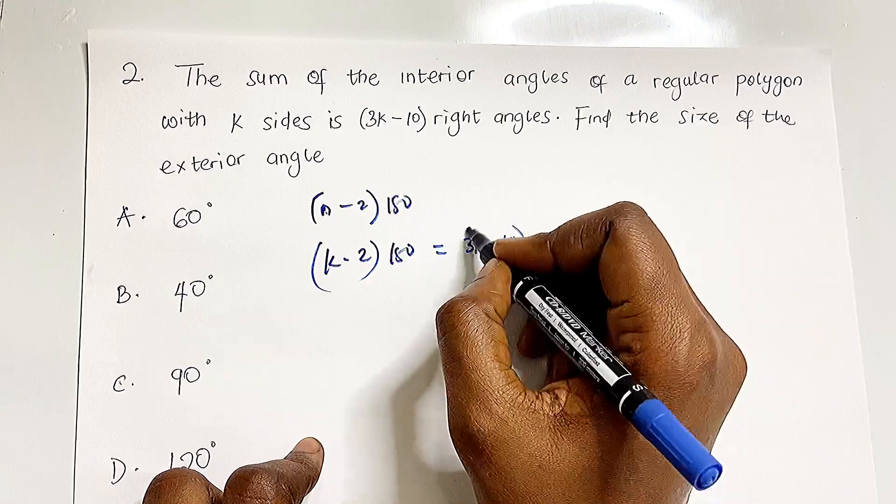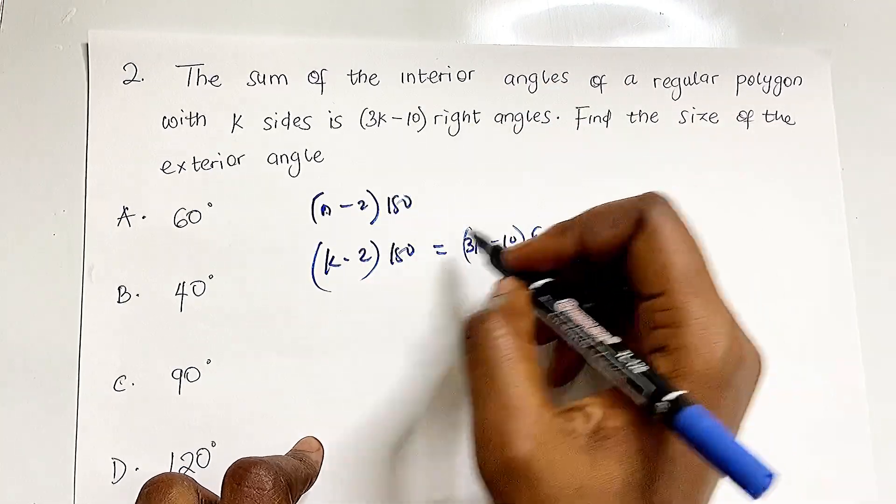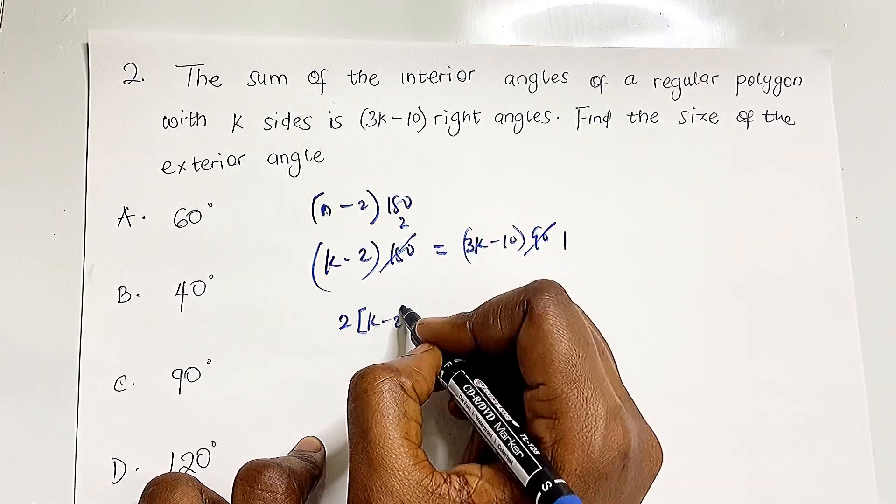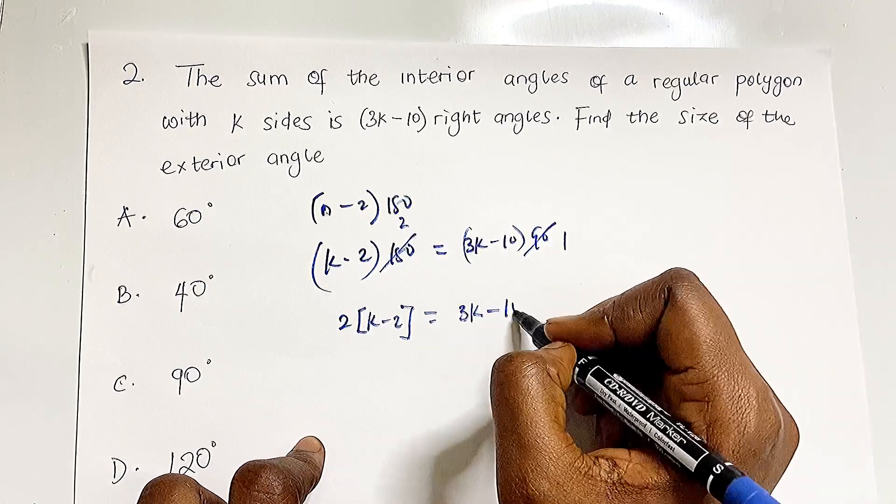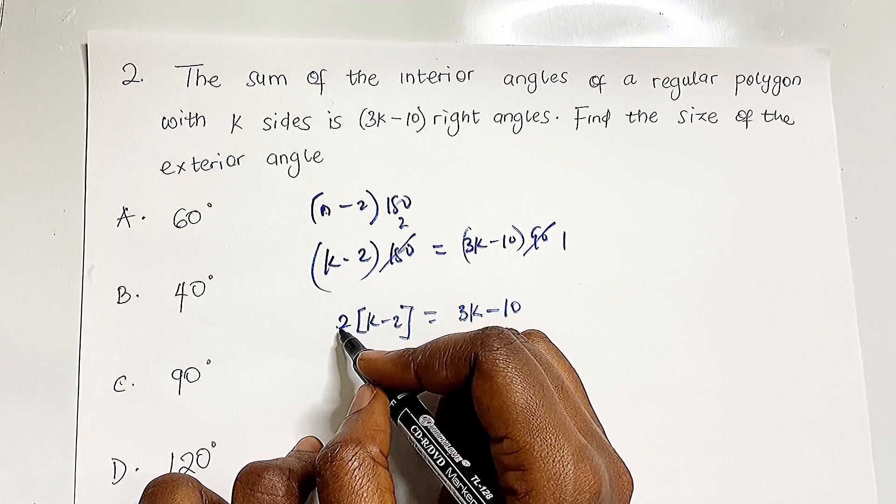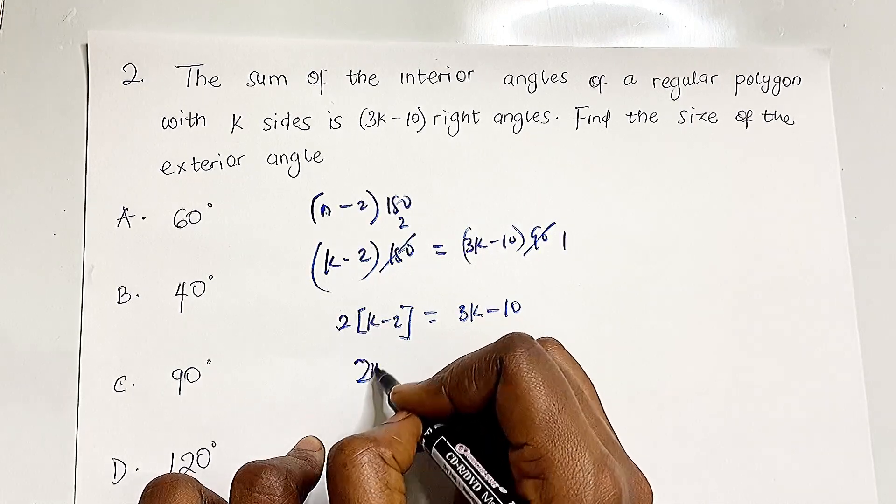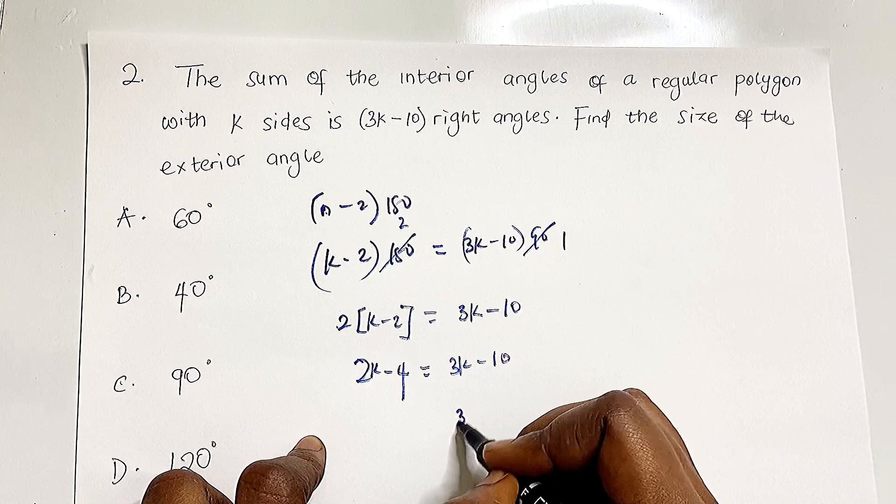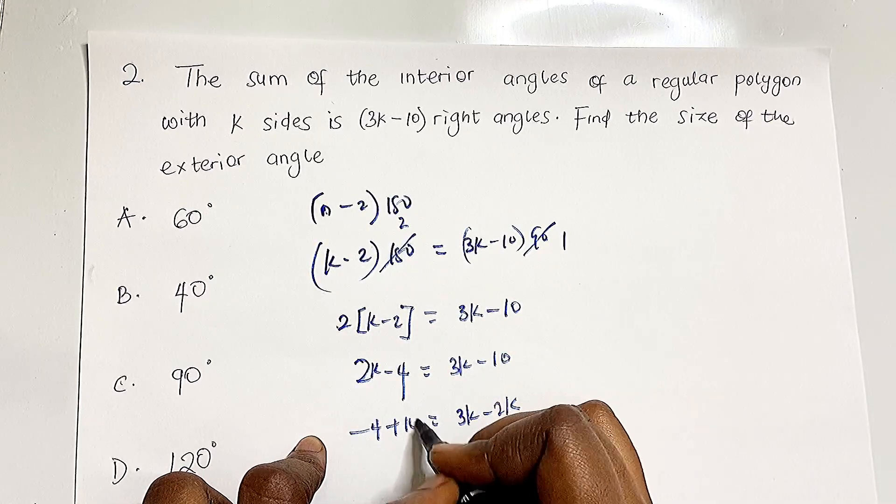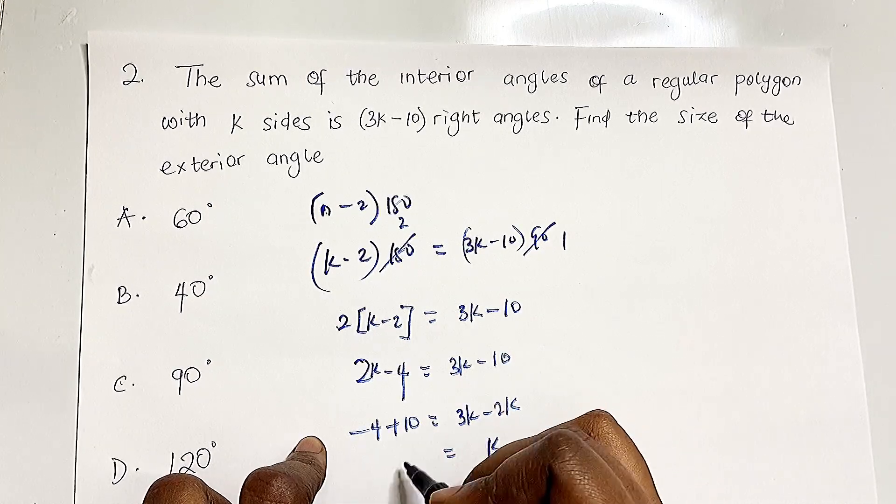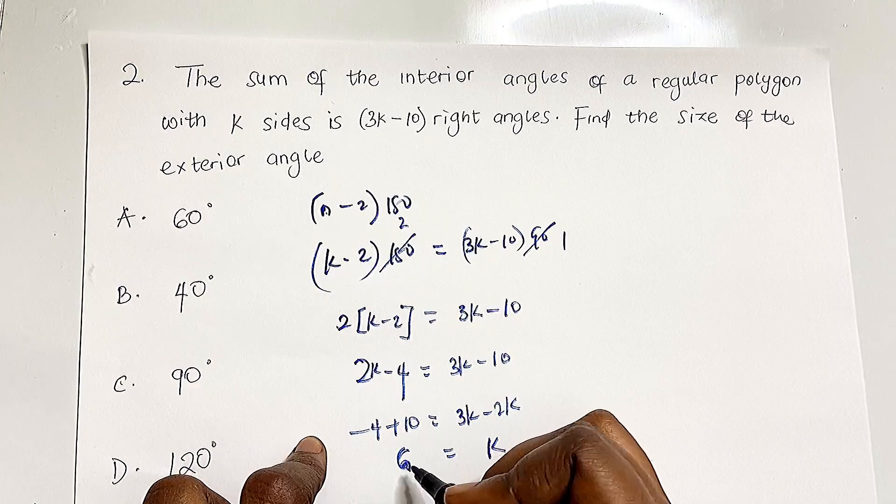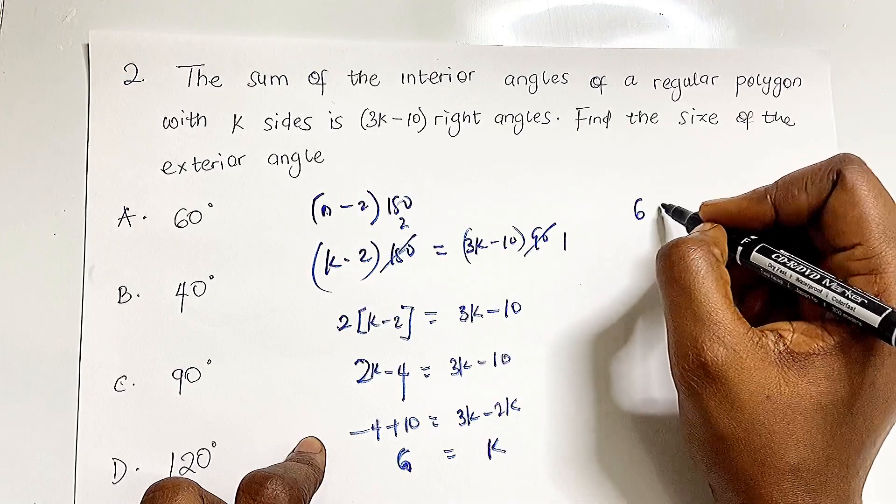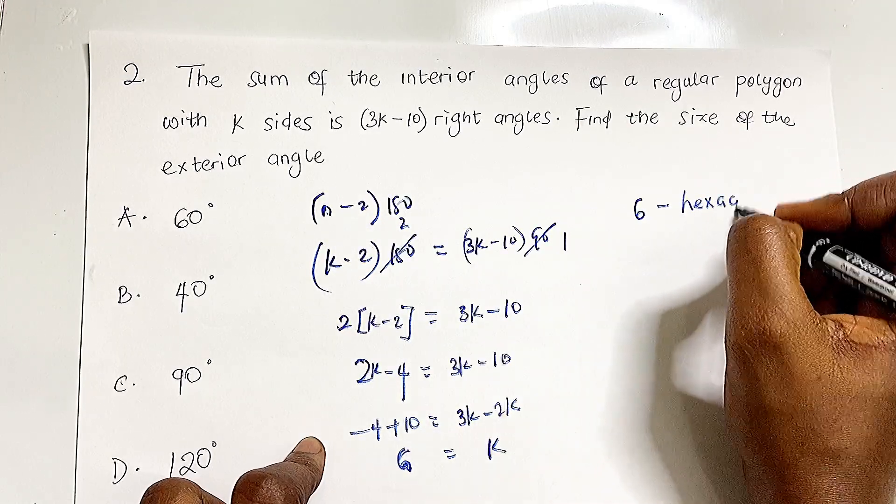This sum equals (3k-10) right angles, or (3k-10) × 90. Since a right angle is 90 degrees, we can simplify: 180 cancels with 90 to give 2. So 2(k-2) = 3k-10. Opening the bracket: 2k-4 = 3k-10. Collecting like terms: 3k-2k = -4+10, so k = 6. This polygon has 6 sides, which means it's a hexagon.